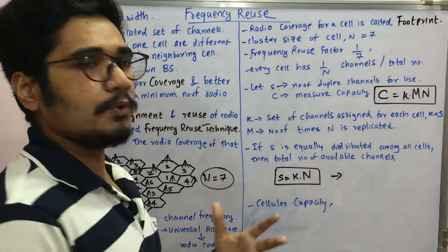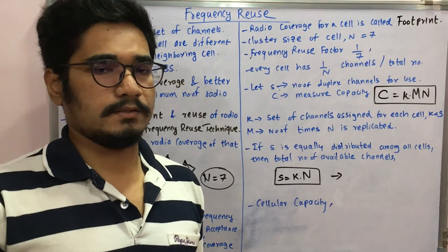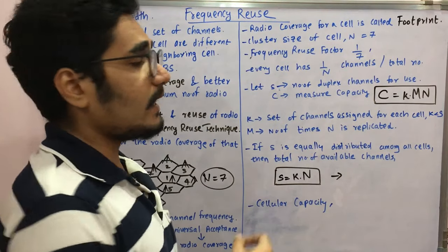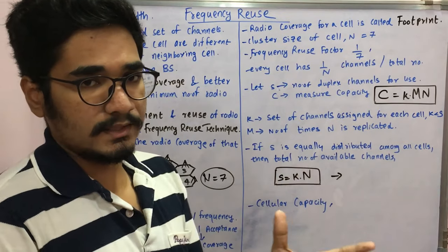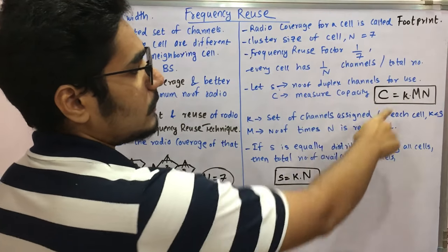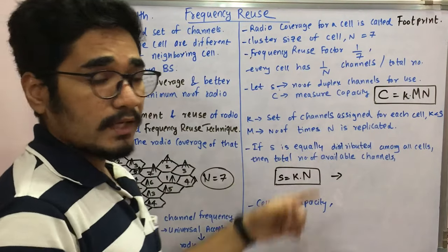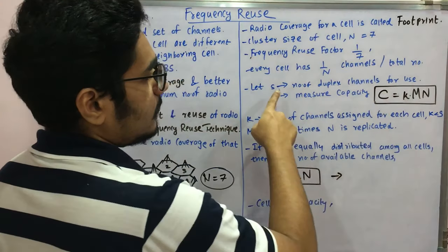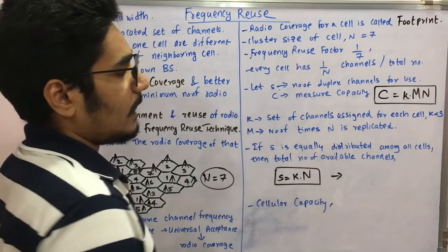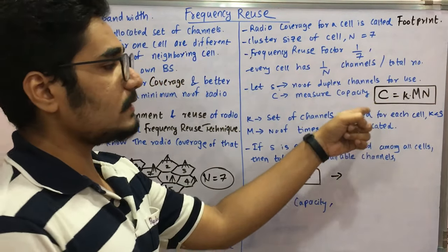Let s be the number of duplex channels available for use. Duplex means both parties can transmit and receive simultaneously. Let c be the capacity — how many communication channels can be allocated. The capacity is given by c equals k times m times n, where k is the set of channels assigned to each cell with k less than s, and m is the number of times the cluster of size n is replicated. This gives the equation c equals k times m.